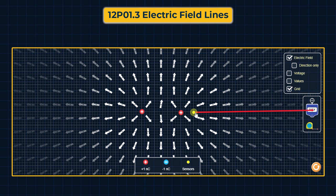We can see that the electric field direction is towards the right side, because both positive charges contribute a field directed away from themselves. With two positive charges on the right side, the net electric field is directed to the right.